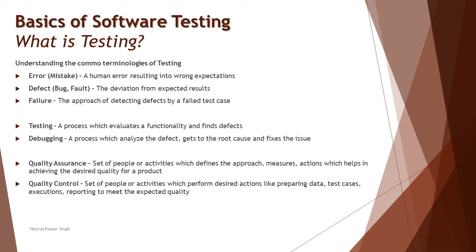A tester is limited to testing; debugging is performed by developers. A tester is not responsible for debugging the code to fix the issue. However, if you are an automation tester, you are also responsible for debugging — because in that environment you are not testing a product, you are building an automated test suite and writing automation scripts. You become the developer of that automation script, so debugging applies to you. At that point, you are not a tester of the application but a developer of an automated test.